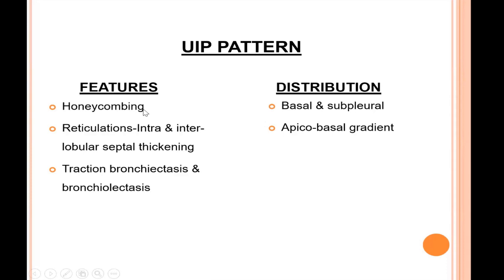Honeycombing is a core feature of usual interstitial pneumonia. If basal and sub-pleural honeycombing is present, we can confirm on CT that it is a UIP pattern, and if no cause is identified we can label it as idiopathic pulmonary fibrosis. Other abnormalities include reticulations — intra- and interlobular septal thickening — and traction bronchiectasis and bronchiolectatic changes. If these findings are seen in basal and sub-pleural regions without honeycombing, we call it only a probable UIP pattern and cannot confirm the diagnosis on CT.